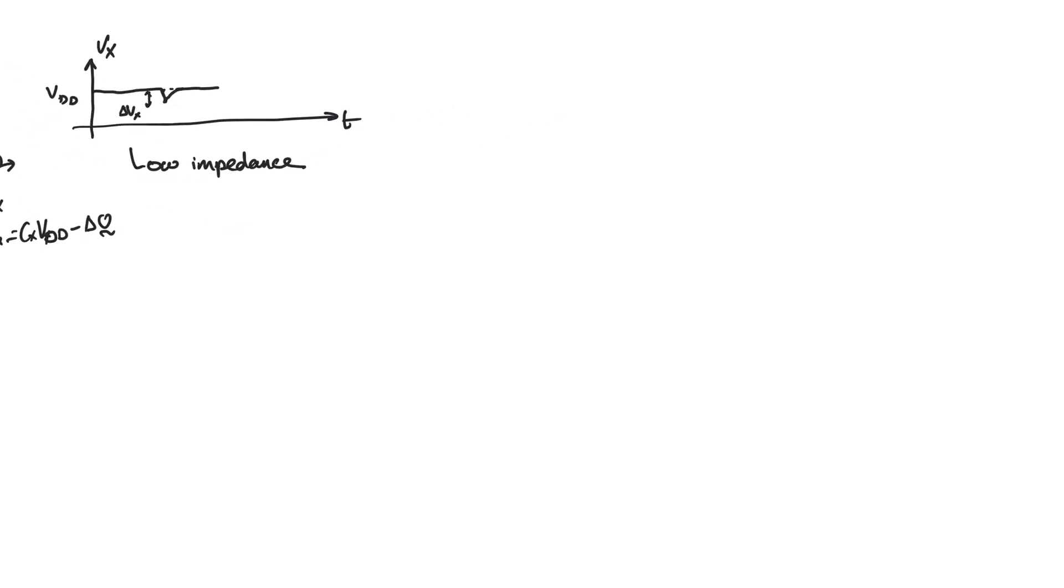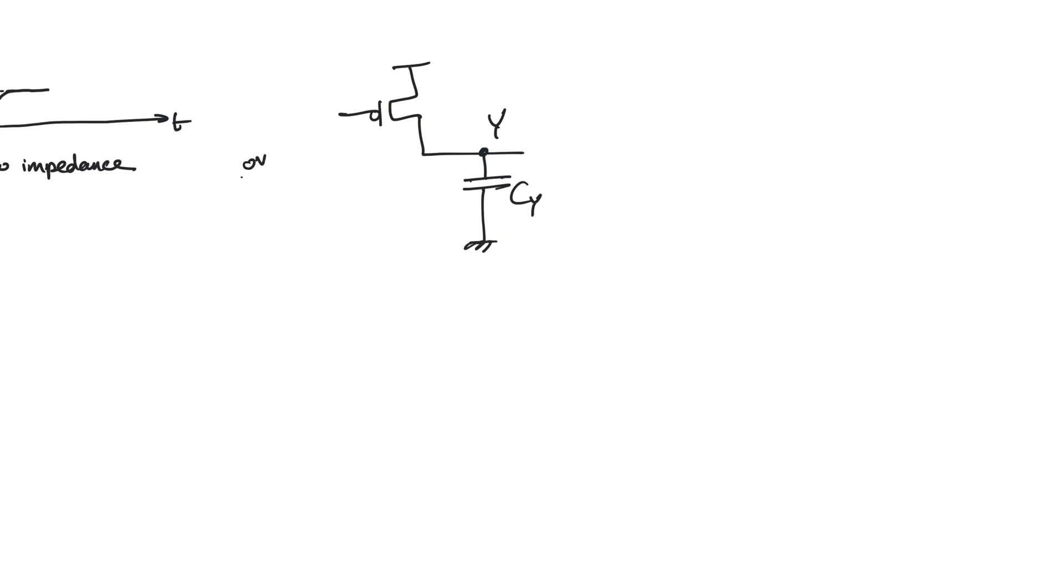Now, let's imagine that we also have a PMOS whose drain is connected to a node, and this node naturally has a capacitance. This node is called node Y in this case. Now, the gate of the PMOS is connected to zero volt for a very long time. So this allows the PMOS to charge the capacitor up to VDD. And so we will start out with a node VY equal to VDD. And in this case, node Y and node X are no different from each other.